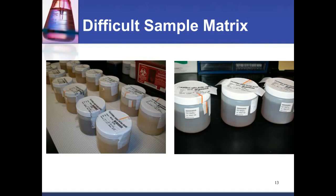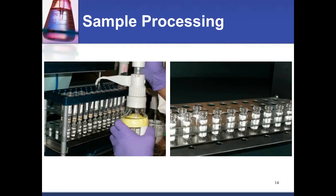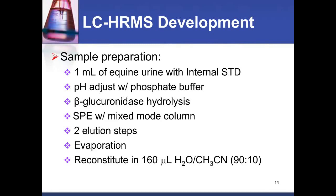We use urine as our matrix, which is quite dirty in the case of a horse. Horses are herbivores consuming lots of grain and forage, and those components get excreted in the urine. Additionally, horses develop a mucus in their bladder that also comes out in the urine, so we need to deal with that during sample preparation. We use a solid phase extraction approach to eliminate most of the biological matrix we're not interested in, directly collecting and eluting into autosampler vials tracked with a barcode system, all compatible with the Q-Exactive software.